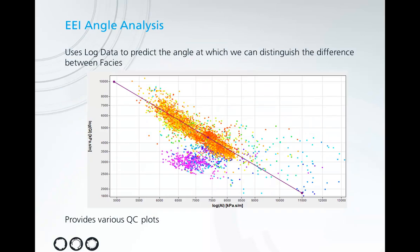I'm going to use a tool called EEI Angle Analysis and predict the angle at which we can best distinguish the two facies by using this QC plot.